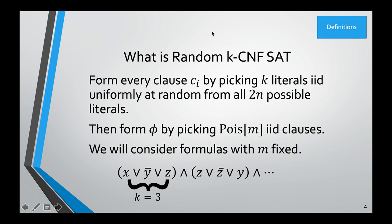We're interested in random KCNF-SAT — not the worst-case version, but where the input is chosen as a random formula from all possible formulas. You generate each clause by picking K literals IID uniformly at random from all 2N possible literals, where N is the number of variables and 2N accounts for each variable having a negated or unnegated form. Random means formulas aren't particularly hard — they're just chosen at random, as opposed to worst-case where you're given the worst possible formula for a given algorithm.